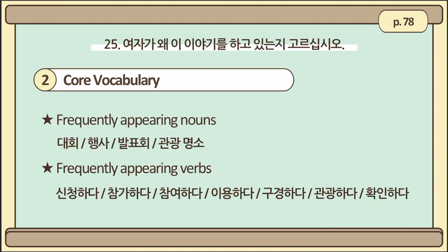You can find more core vocabulary related to this question type on page 78: 대회 (contest), 행사 (event), 발표회 (conference), 관광명소 (tourist destination), 신청하다 (to apply), 참가하다/참여하다 (to attend or to participate), 이용하다 (to use), 구경하다/관광하다 (to view or to tour), and 확인하다 (to confirm or verify).